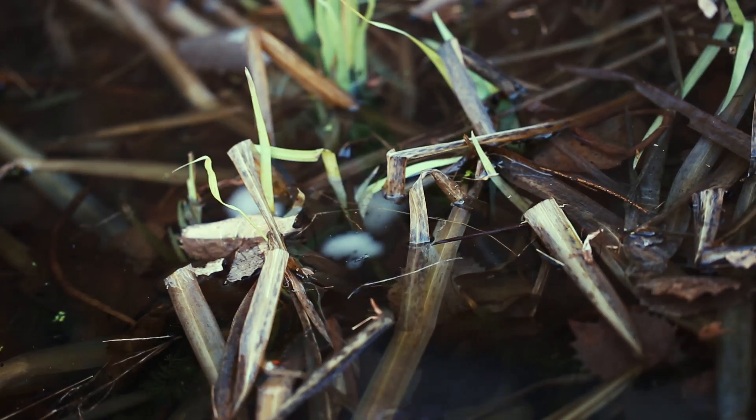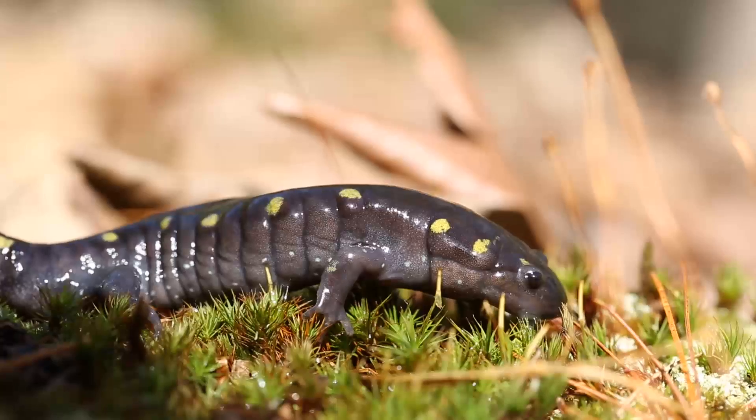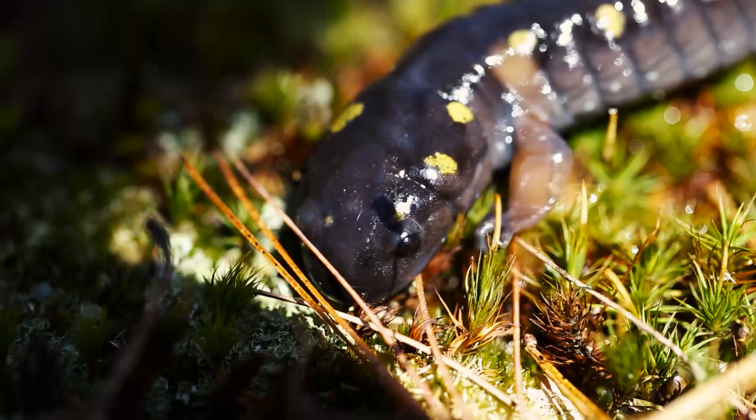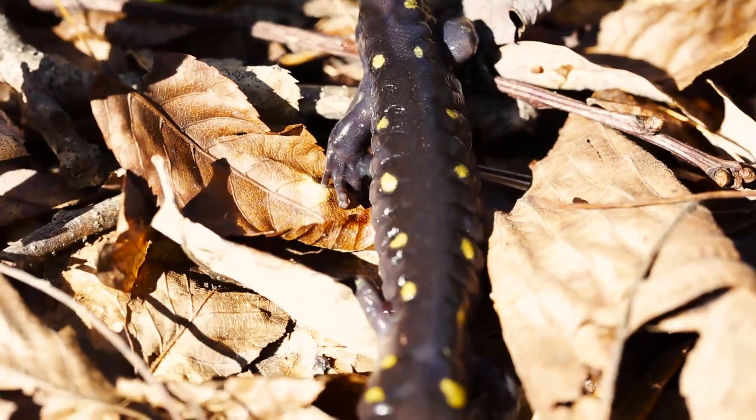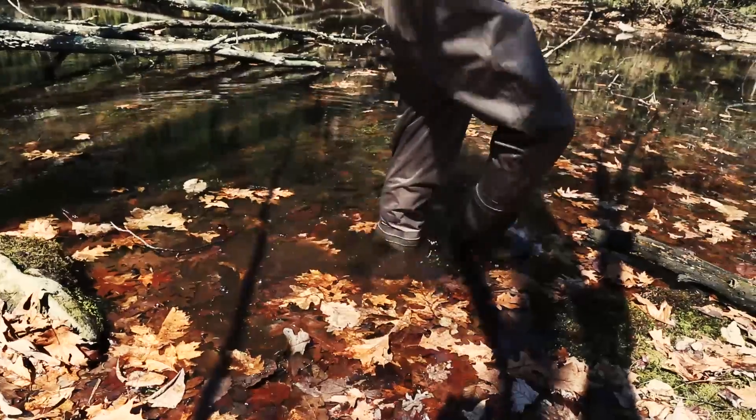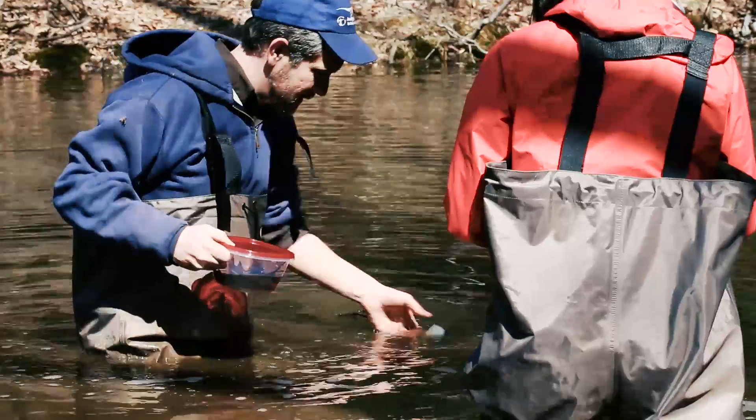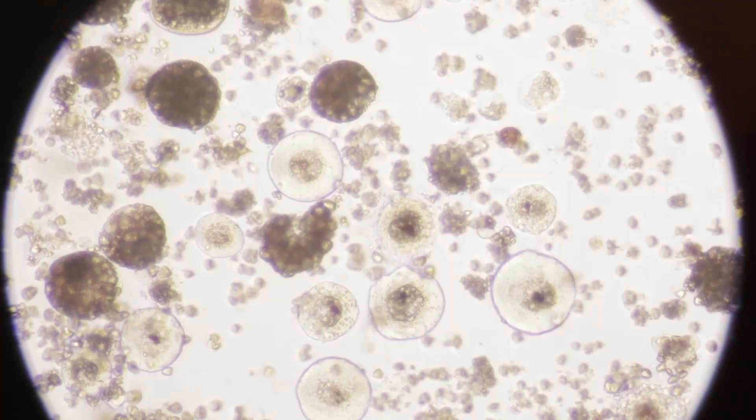In the springtime, after the first warm rain, that's when spotted salamanders start getting on the move. Then they lay all these beautiful little egg masses out in all the ponds across the East Coast. So we go out there in our waders, collect egg masses, and then set up different ways of studying them in the lab.